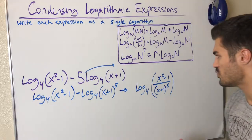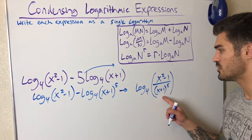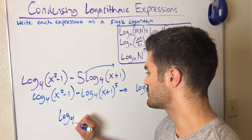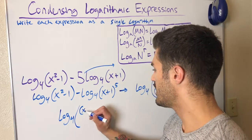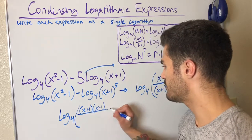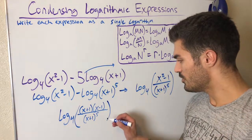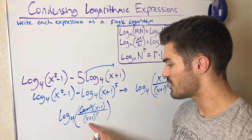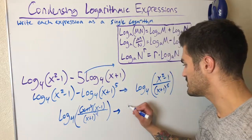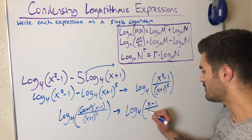On the bottom is x plus 1 to the 5th power. Some people might say done here, but you can actually simplify one step further — this numerator is a difference of squares. If I factor the top, x squared minus 1 becomes (x plus 1)(x minus 1). One of these (x plus 1) factors cancels with one of the (x plus 1) factors in the denominator, leaving x plus 1 to the 4th on the bottom. My final condensed logarithmic expression is log base 4 of (x minus 1) over (x plus 1) to the 4th power.